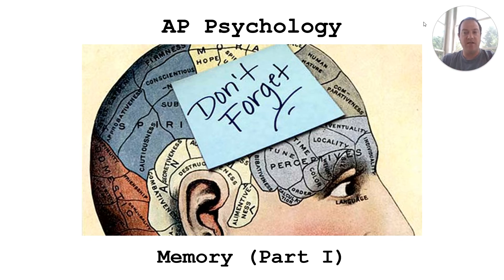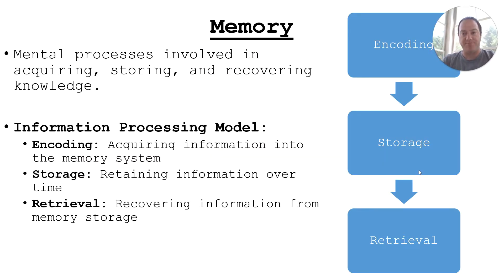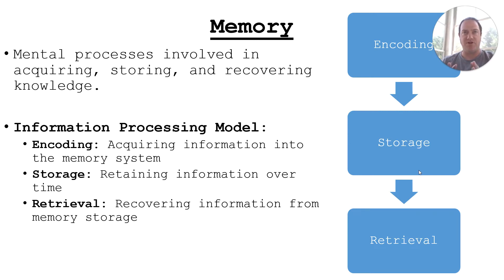There are two models of memory and how the process occurs. The first is the information processing model, which is the most basic. If you just want to understand the general process of memory, this is the simplest one. It doesn't really talk much about short-term or long-term memory — that's the Atkinson-Shiffrin model, which is on the next slide. That one is much more complex and also more realistic.